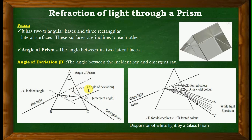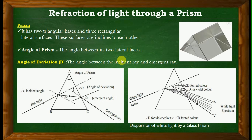The angle of deviation tells us how much the light has deviated from the incident to the emergent ray. The angle of incidence is the angle between the incident ray and the normal. The angle of refraction is the angle between the refracted ray and the normal. Similarly, the emergent angle is measured at the point where light exits the prism.